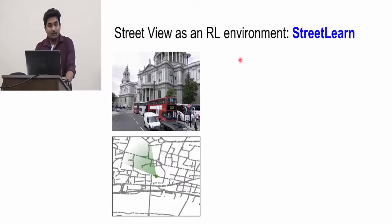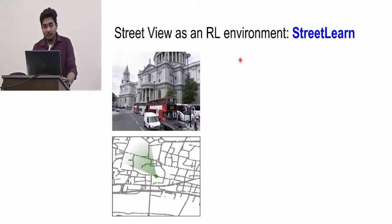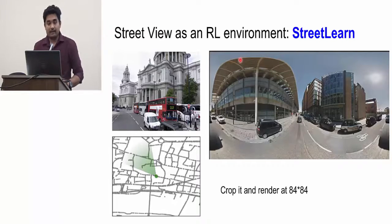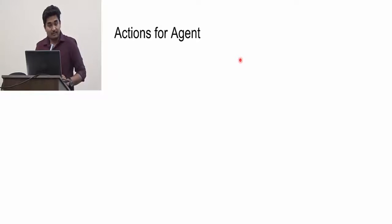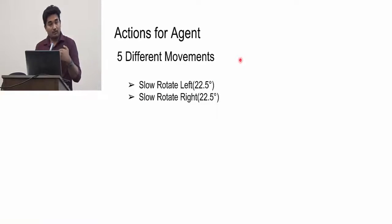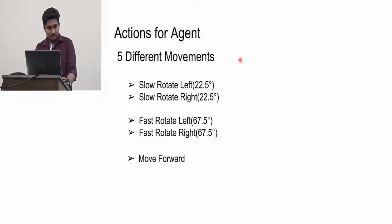They made an environment called StreetLearn. In StreetLearn there are lots of images from Google Street View. Since most Google Street View images are panoramas, they cropped and rendered each image at an 84 by 84 scale. The agent has five possible actions in any state: rotate left slow, rotate right slow, rotate left fast, rotate right fast, and move forward.